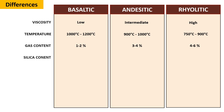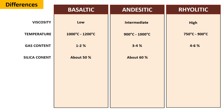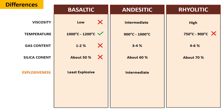Rhyolitic magma possesses the highest gas content of 4 to 6%. Silica content: The silica content in basaltic magma is roughly 50%, marking the lowest level. Andesitic magma contains a moderate silica content of around 60%, while rhyolitic magma reaches the highest silica content at approximately 70%. Explosiveness: Basaltic magma is the least explosive, with lower viscosity, gas, and silica content. Andesitic magma has intermediate explosiveness, while rhyolitic magma is the most explosive, due to higher viscosity, gas, and silica levels.